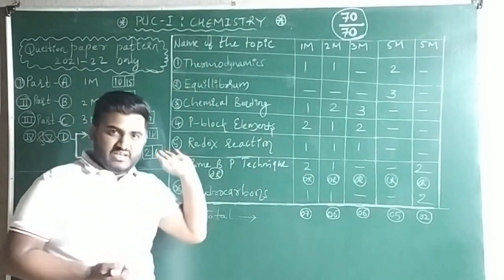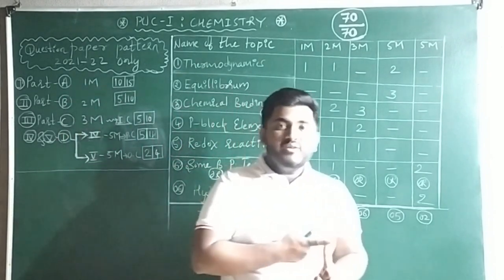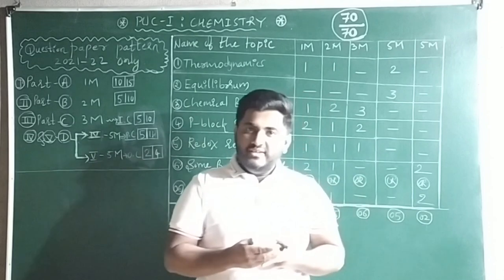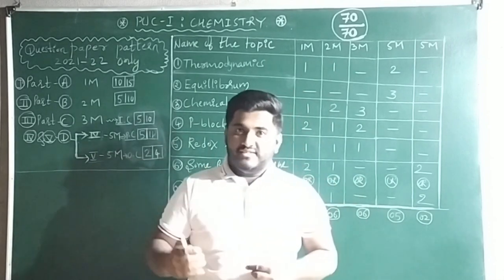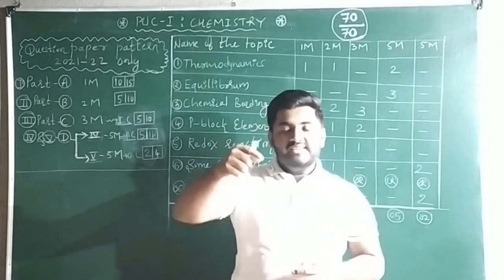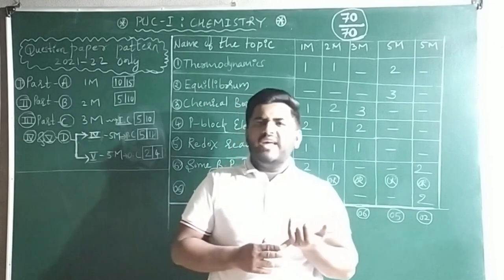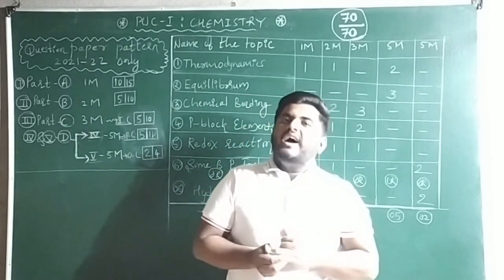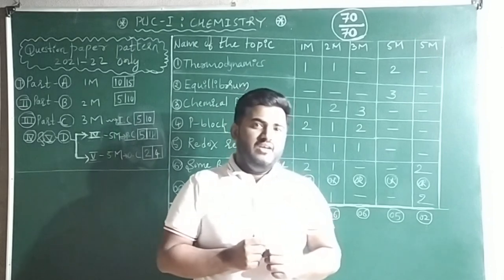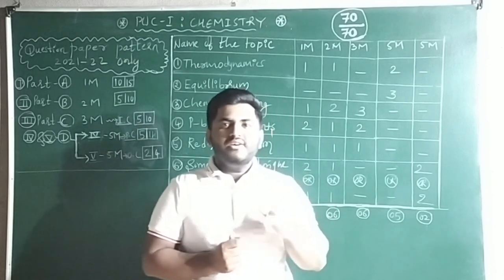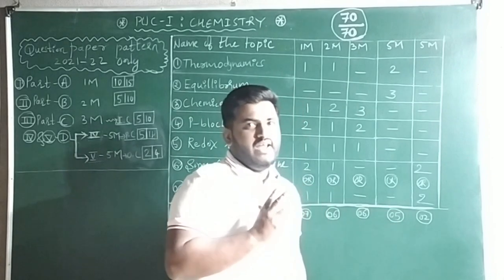By studying these six chapters plus one-mark questions from Chemistry in Everyday Life (which gives 2 questions, bringing total to 9) and from Some Basic Concepts of Chemistry (giving 1 more, totaling 10), you cover all 10 required one-mark questions. I already uploaded a video on important and fixed questions chapter-wise — the link is in the description. Also, definitions like molarity and normality are covered there. I will also provide a question bank for Chemistry in Everyday Life one-mark questions.